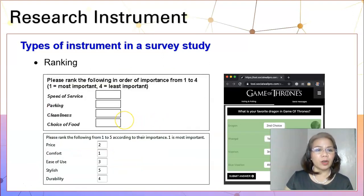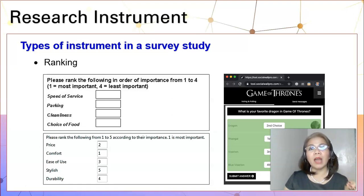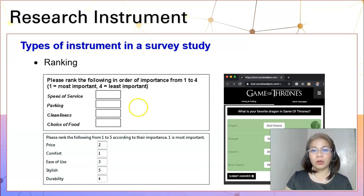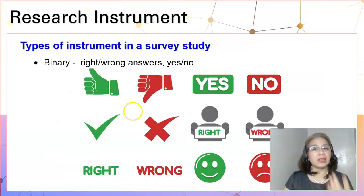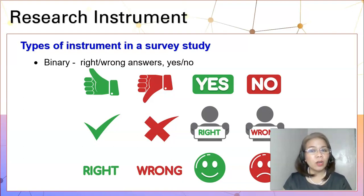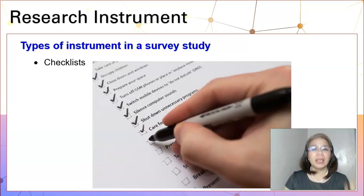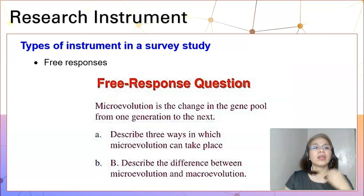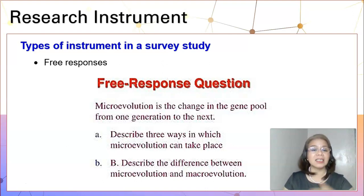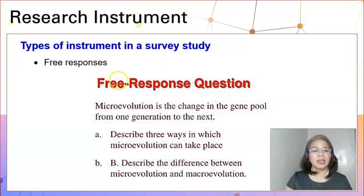Another structure of a survey instrument is a ranking survey instrument, meaning that you will ask your respondents to rank items according to their preference or perspectives. Or it can be a binary survey instrument where respondents answer with yes or no, true or false, or right or wrong. Or it can be a checklist, or you might require respondents to provide free responses such as asking them to describe something, enumerate something, or narrate something. These are the different structures of research instruments used in survey research.